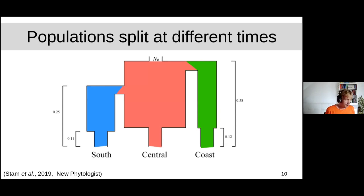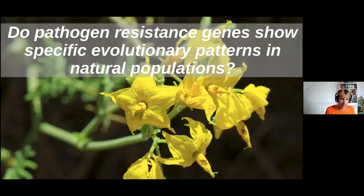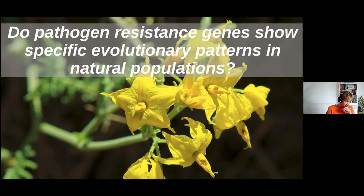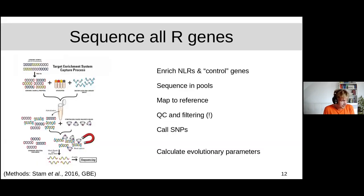Once you have this demographic information, you can start to ask: do pathogen resistance genes show specific evolutionary patterns in natural populations? Are they under stronger selection pressure than the species as a whole, or is adaptation to a pathogen driving the whole species? To address this, we developed a sequencing approach where we enriched for resistance genes — what we call NLR analogs — along with a set of control genes, using a probe-based capture kit that pulls out only the genes of interest.